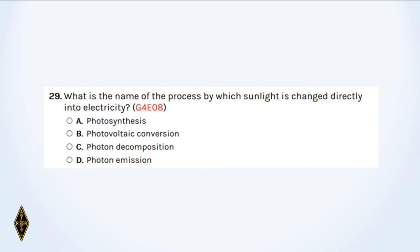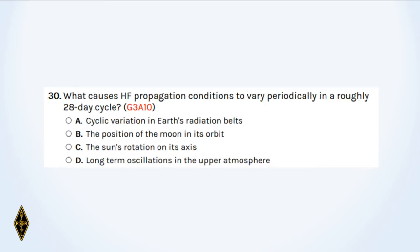And 29: What is the name of the process by which sunlight is changed directly into electricity? And 30: What causes HF propagation conditions to vary periodically in a roughly 28-day cycle?